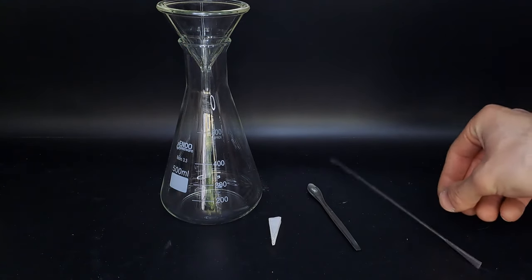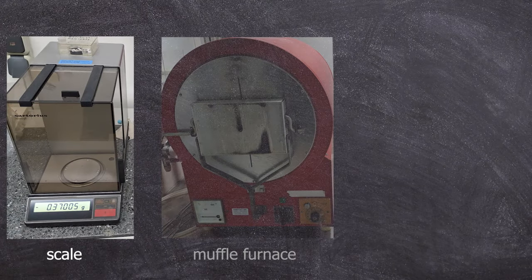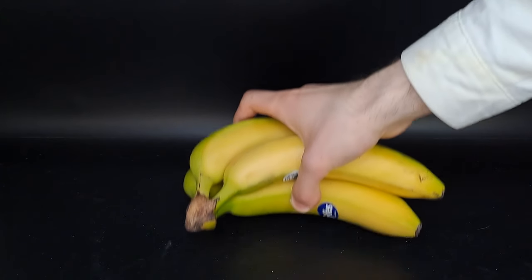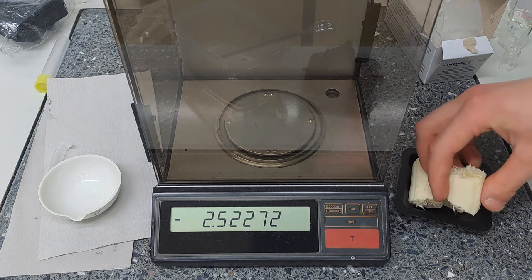As for equipment, we'll need some filtering tools, spoons, spatulas, a scale, and a muffle furnace. A gamma detector and a hot plate could also be useful. In terms of chemicals, we'll just need four bananas.